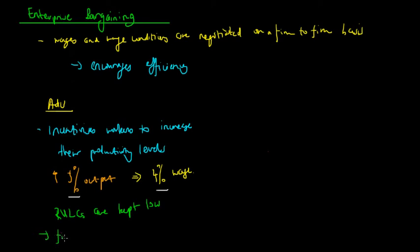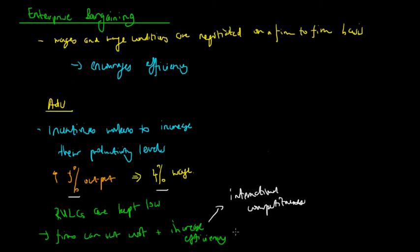So the advantage is that firms can cut costs as well as increase efficiency. Now, as we've noted in a series of other lectures on aggregate supply, an increase in efficiency leads to, firstly, an increase in international competitiveness, and secondly, a decrease in cost inflation.